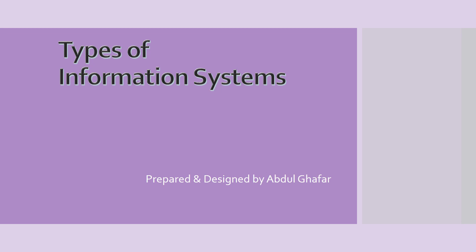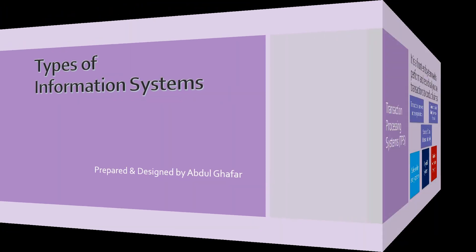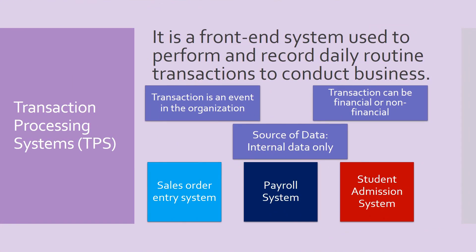There are a number of different types of information systems depending upon different management levels as well as based on information requirements of an organization. The most important category of information systems is transaction processing systems, TPS. For example, Sales Order Entry System, Payroll System, and Student Admission System.